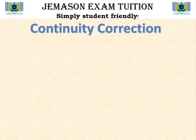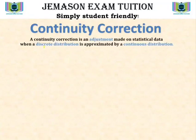Hello, in today's video we are going to look at a very important concept in statistical inferences: the concept of continuity correction. A continuity correction is an adjustment made on statistical data when a discrete distribution is approximated by a continuous distribution.